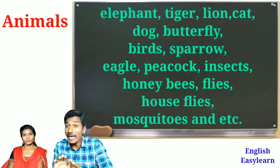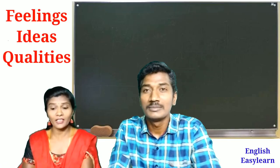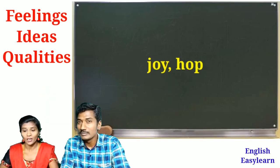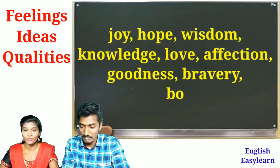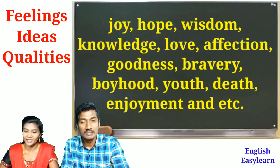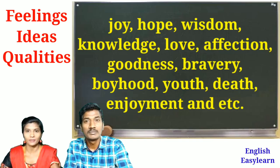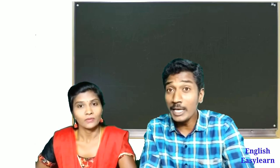The last category is feelings, ideas and qualities. For example: joy, hope, wisdom, knowledge, love, affection, goodness, kindness, bravery, boyhood, youth, death and enjoyment — all these come under nouns.